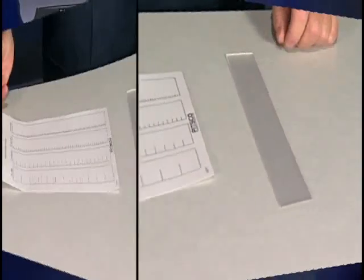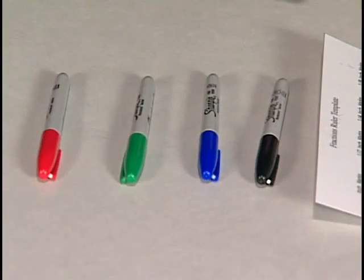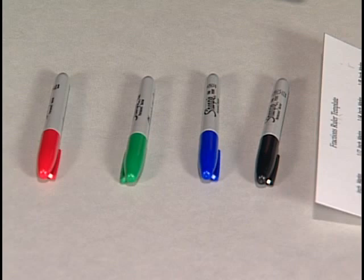To make our own ruler, we will need a clear plastic strip, a marking template, a black marker, a red marker, a blue marker, and a green marker.